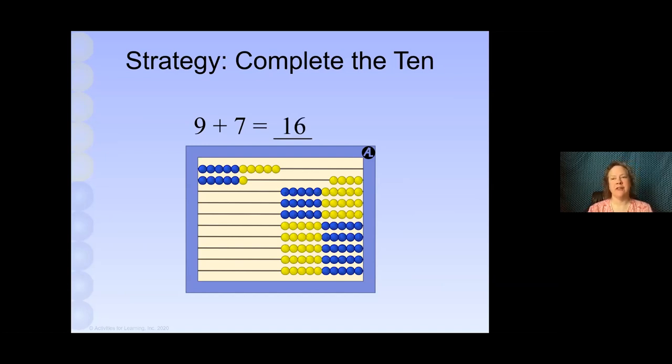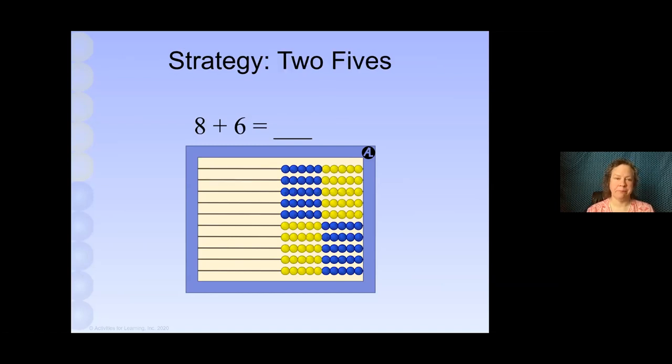Now, the next strategy that we're going to talk about is the two fives strategy. I'll enter 8 on the top line and 6 on the next. Can you see right away that there's two fives? So if I have two fives, I know I have 10. And what's left over is 4. So, I have 10-4, or 14. How about 7 plus 5? Enter 7 on the top line, 5 on the next. Identify the two fives. There's my 10. I have two left over. My answer is 10-2, or 12.